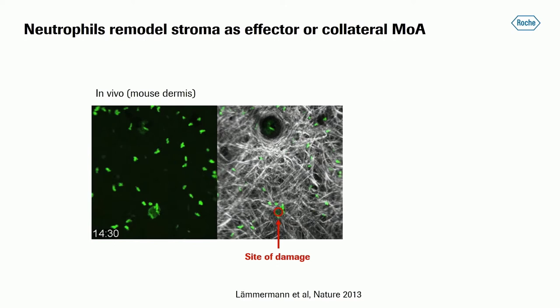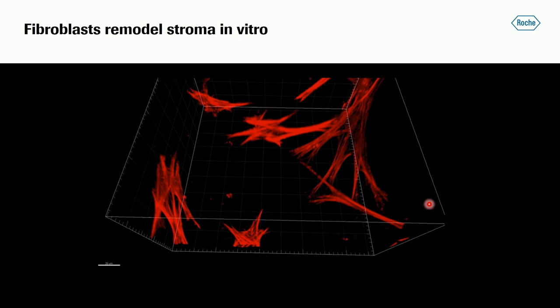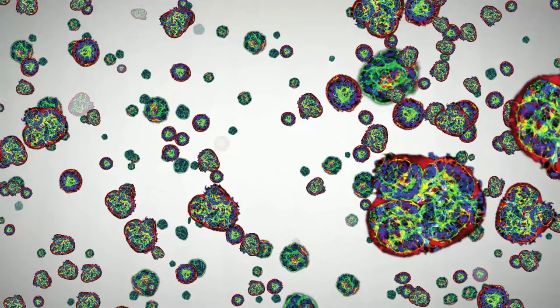Here's a beautiful in vivo study by Tim Lemmermann. You can see how green mouse neutrophils within minutes migrate towards an induced damage. We can visualize how the fibroblasts sit in a 3D context, and then they produce collagen fibers in between them. Indeed, fibroblasts alone were sufficient to recruit neutrophils in their in vitro platform.